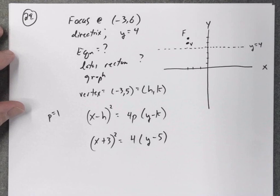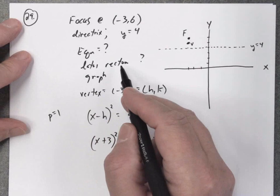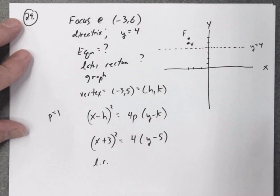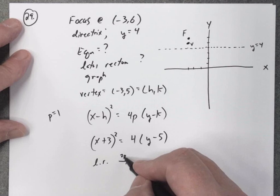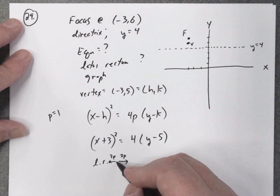Now the way we try and sketch the graph of this parabola is by using what I call the spread, the official term is the latus rectum. The latus rectum, in this case, from the vertex, you move 2p to the right, and 2p to the left, from the focus.